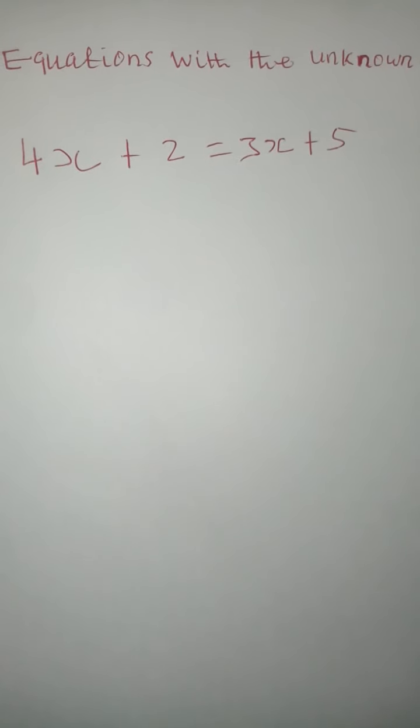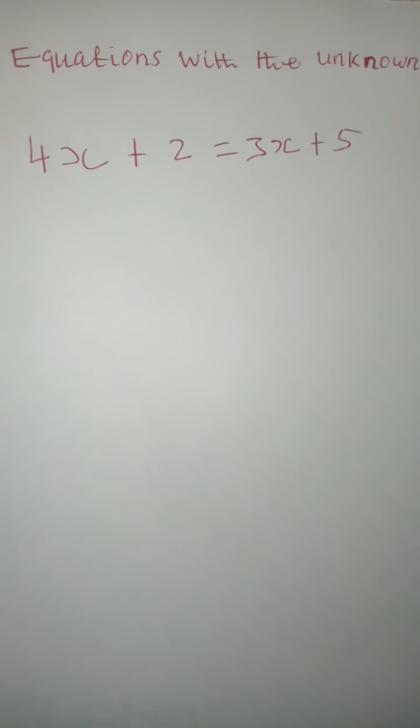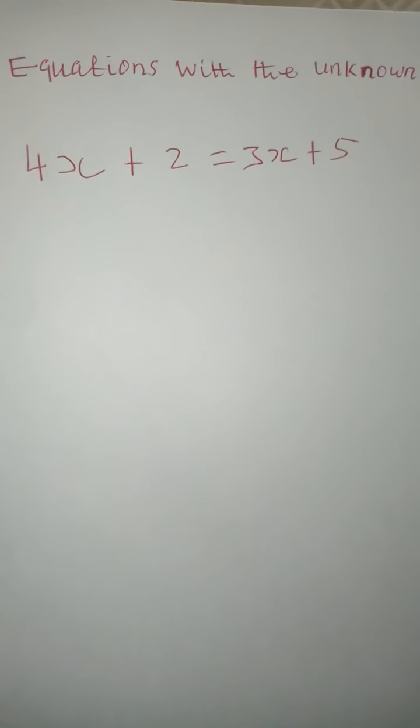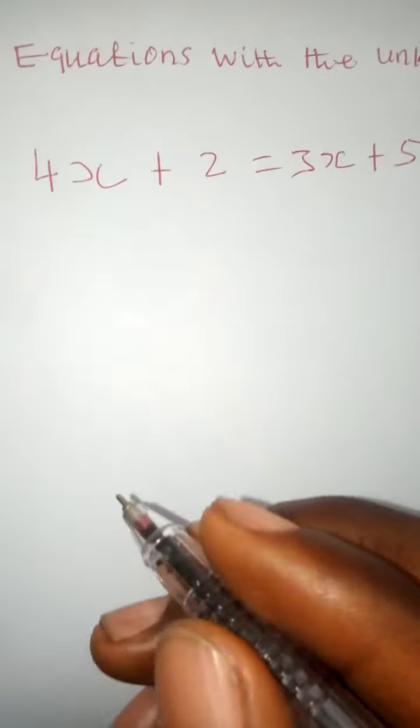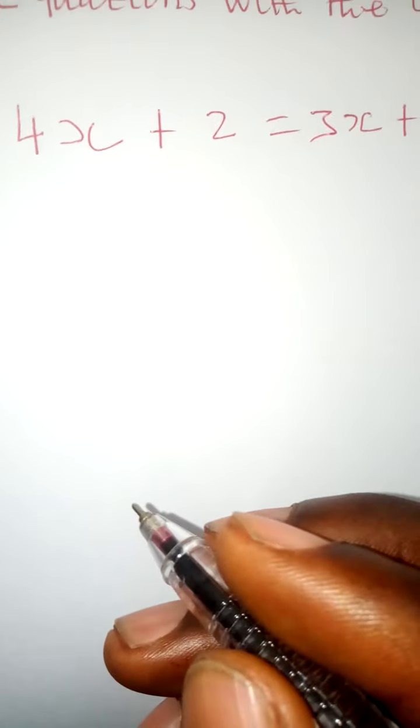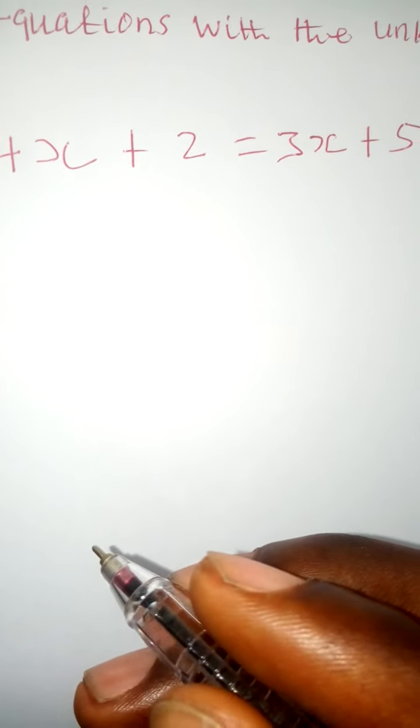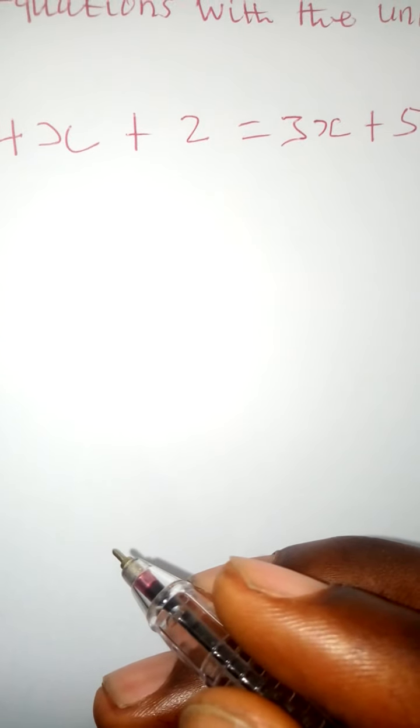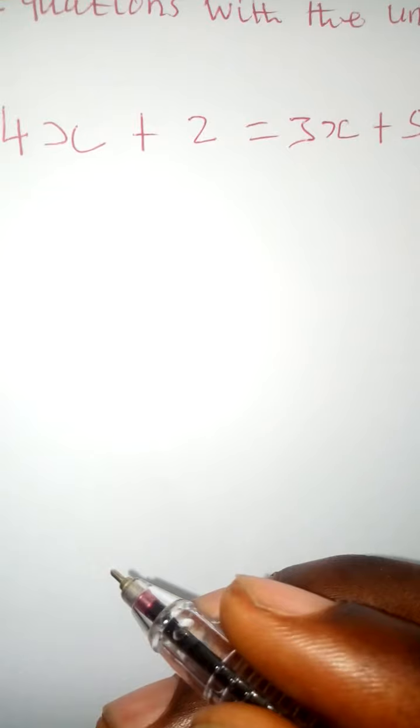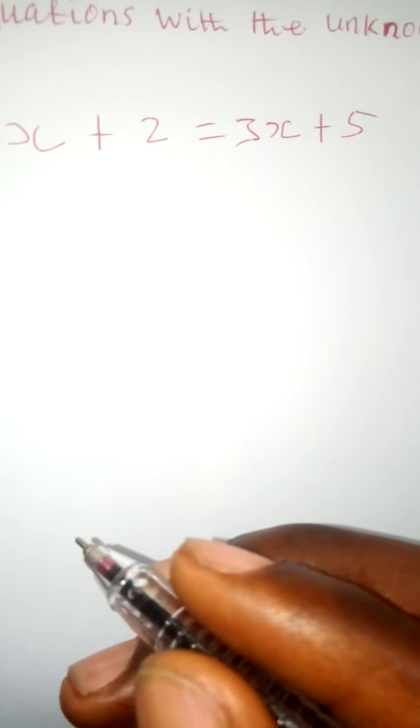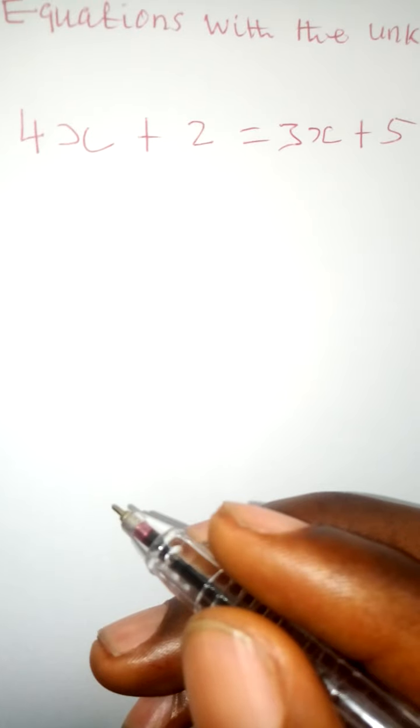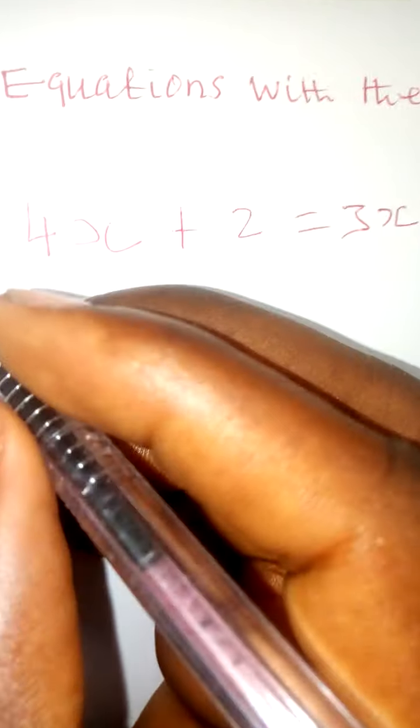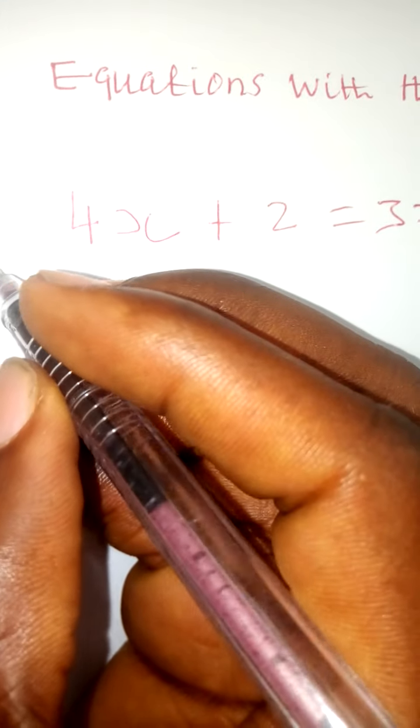Here, if you look at this problem, we have the unknown on both sides of the equation. I think the easiest way is to find the smallest number. Let's say the 3x is the smallest number.